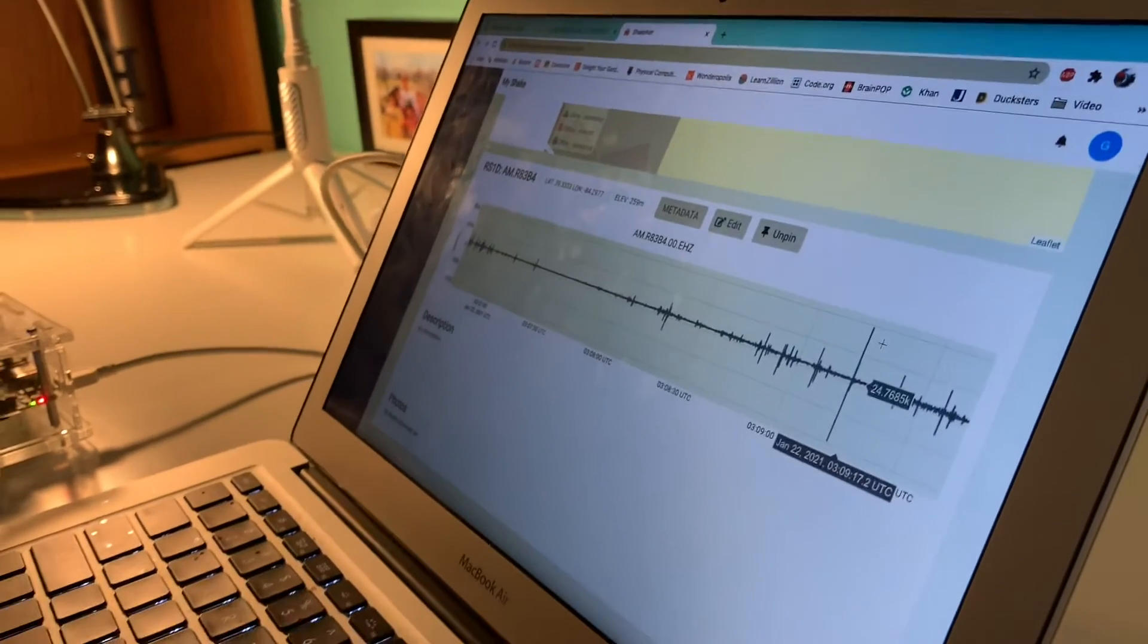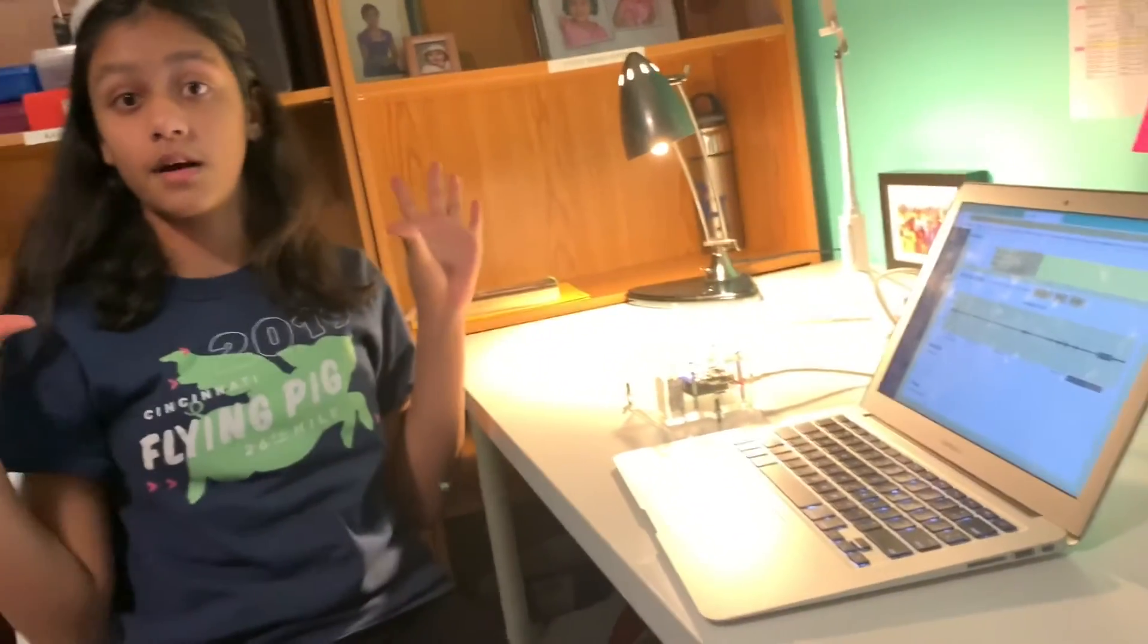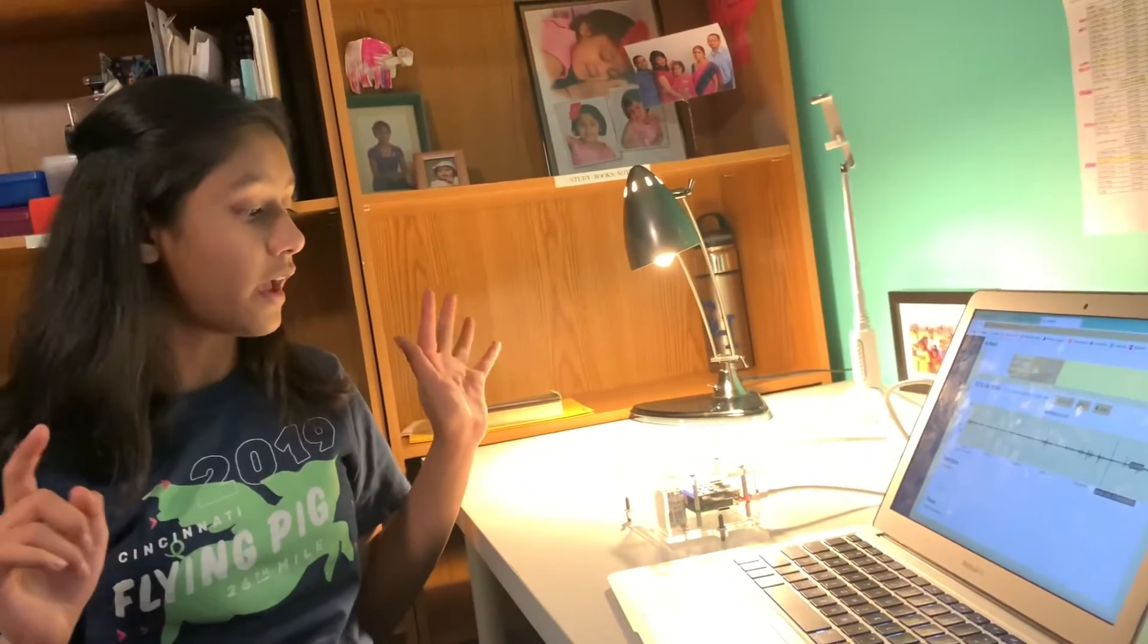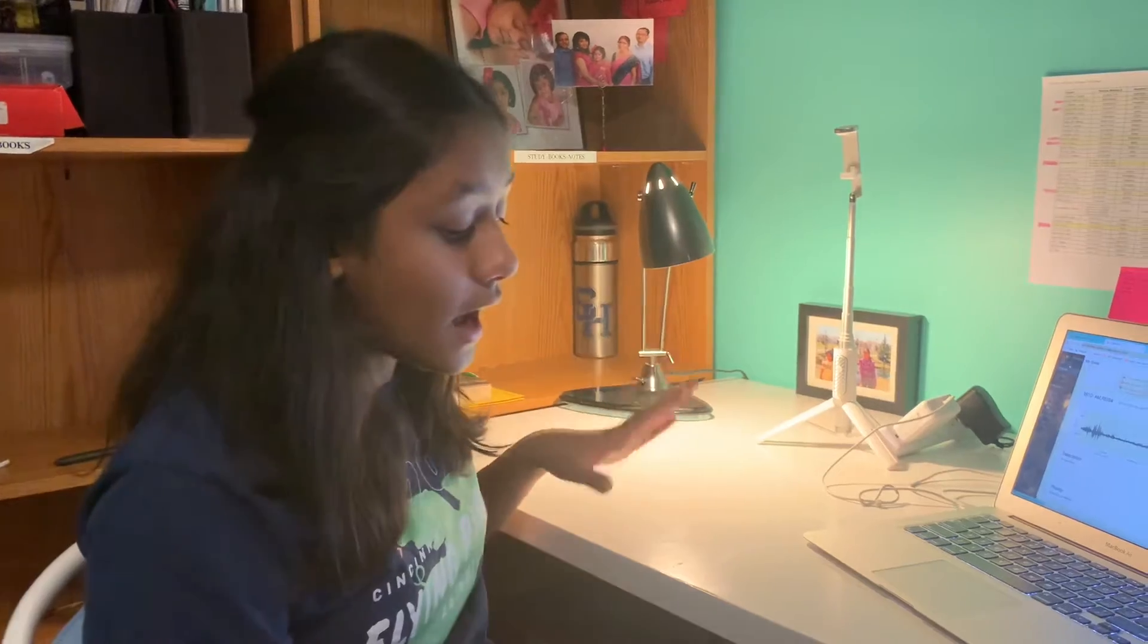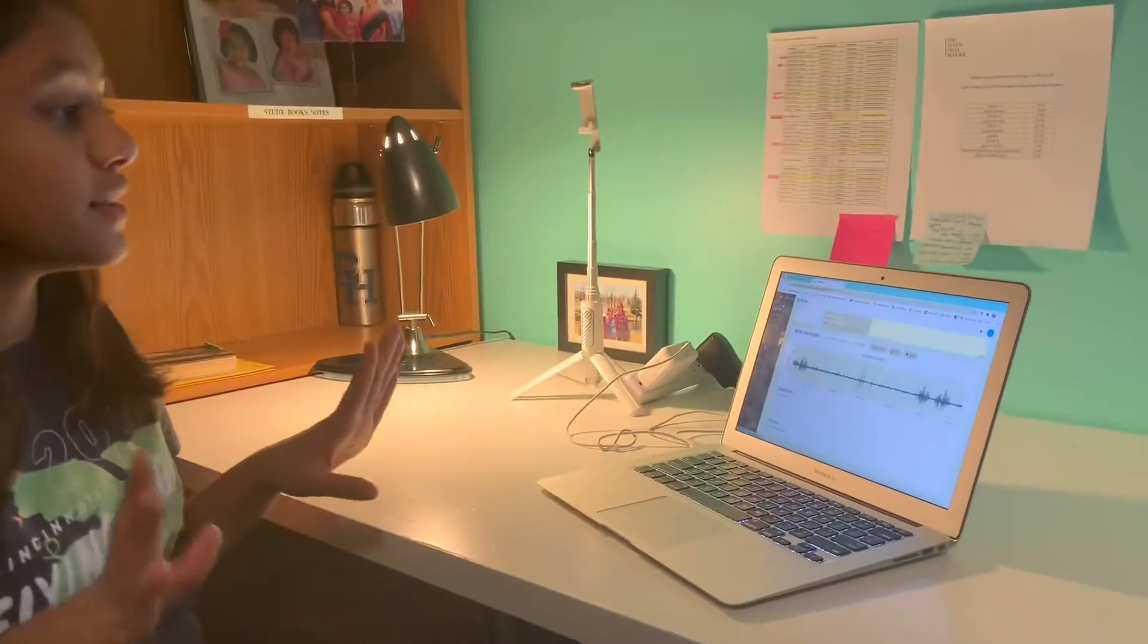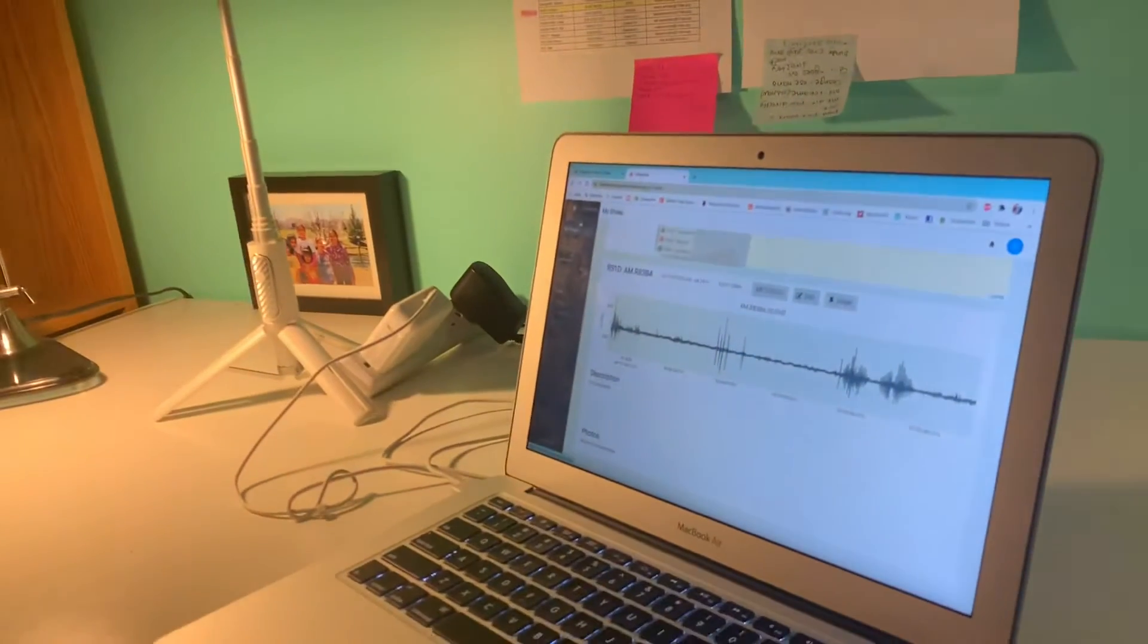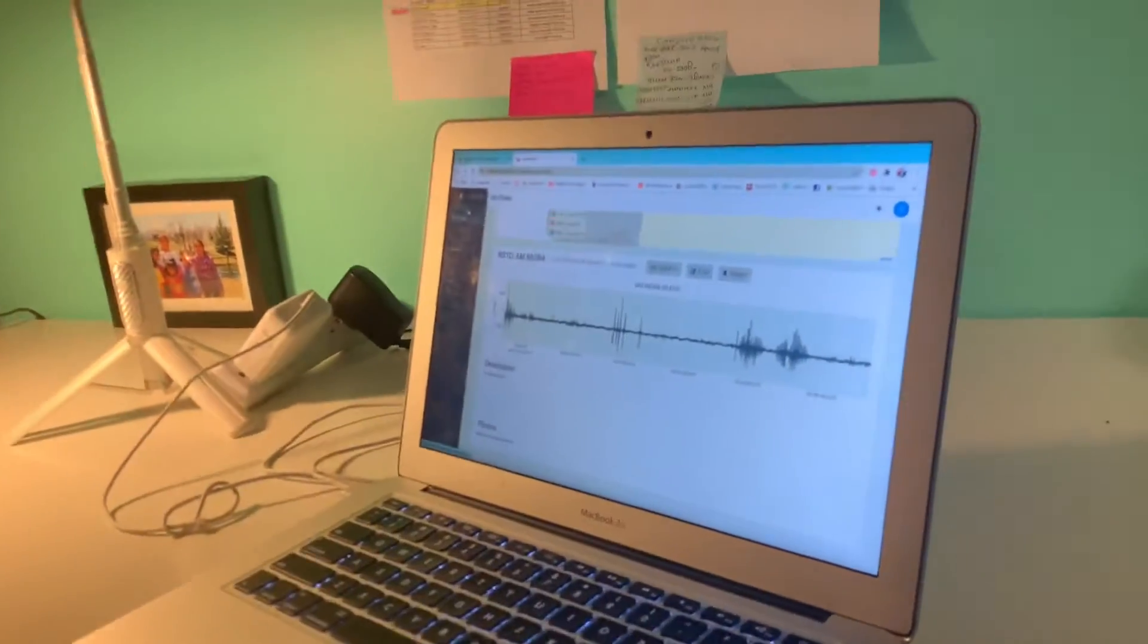Now, another thing—one last experiment I'm going to do—is I'm going to put this all the way down in the basement of our house, and I am going to make some disturbance at the top level and see if it can detect. So now I put the seismograph downstairs in the basement, which is two floors beneath where I am, and I am going to make a disturbance with my foot. Actually, I'm just going to bang on the table, and we're going to see if it can catch it. You can see all this is from previous disturbance. This is how it should normally look. Let's see how this goes. One, two, three.